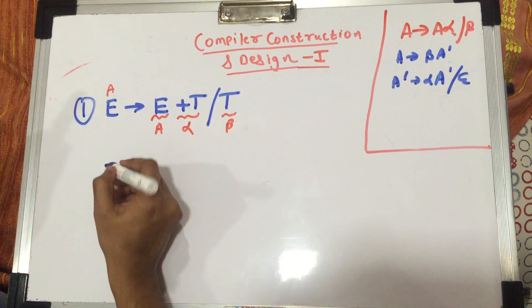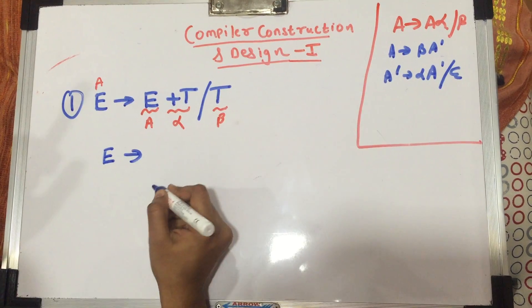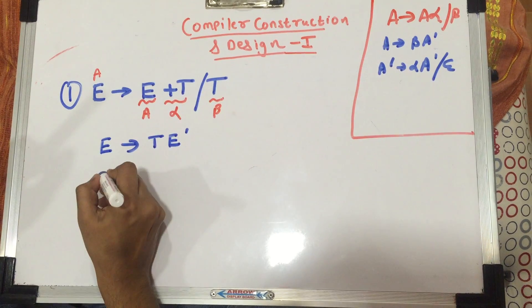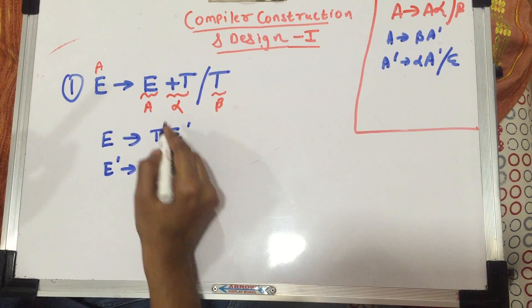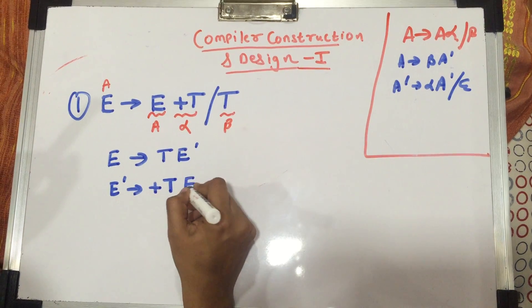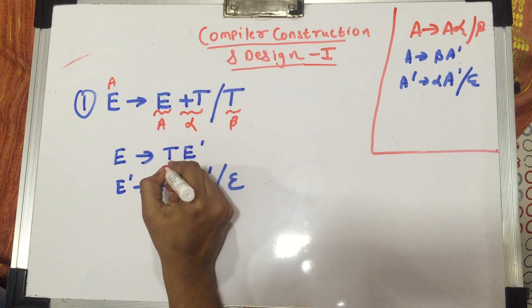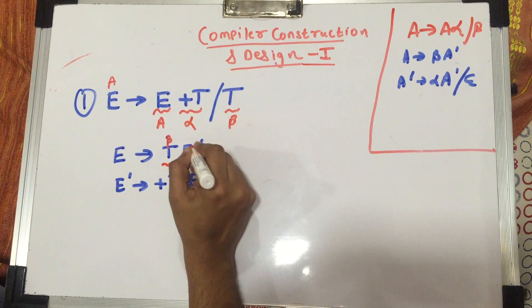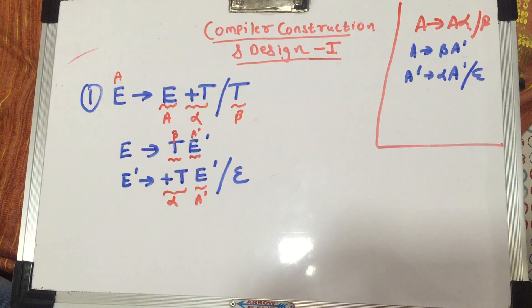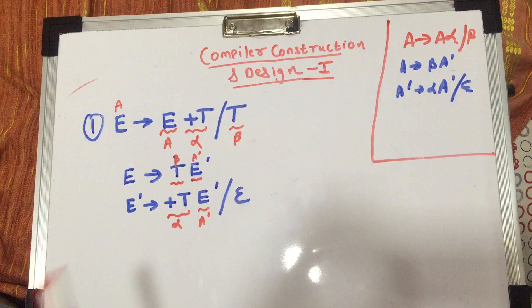Well, you write A gives you beta A dash and A dash gives you alpha A dash slash epsilon. So to eliminate this, what we are going to do? E, that is my A, gives you beta A dash, that is T E dash and E dash gives you alpha A dash. So plus T E dash slash epsilon. So this is my beta, this is my A dash, this is my alpha again, this is my A dash and this is my epsilon. So as you can see that I have just put in the formula from here to here.